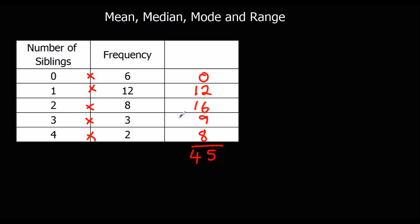And the frequency is 18, 19, 20, 31. So to work out the mean, we need to do 45 divided by 31.